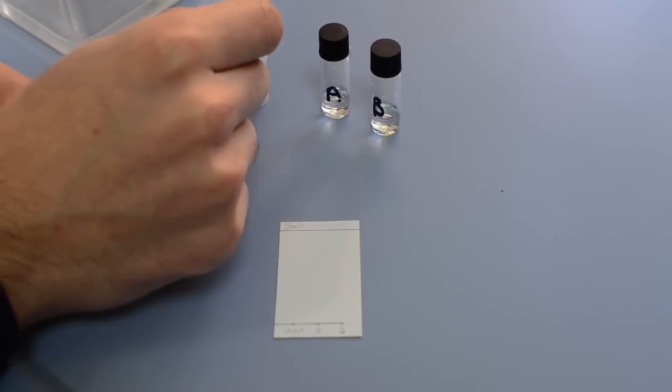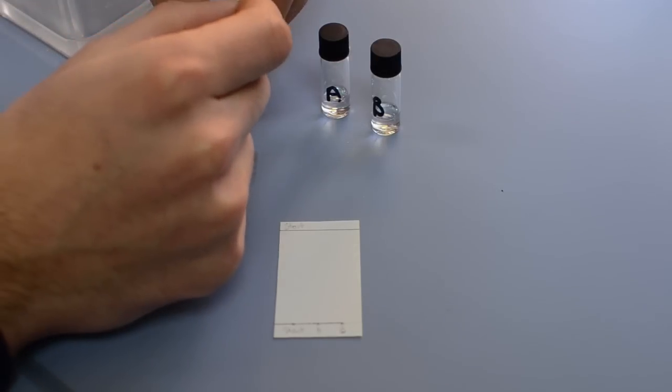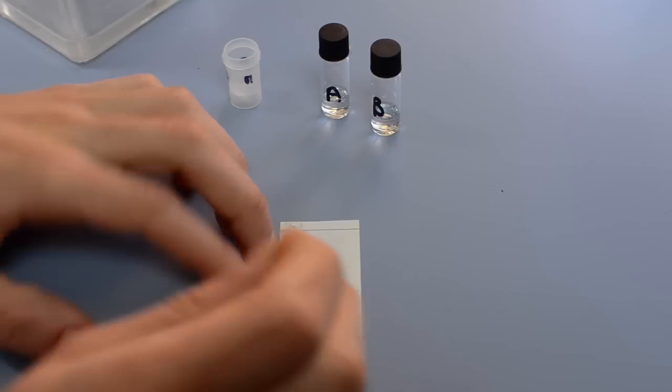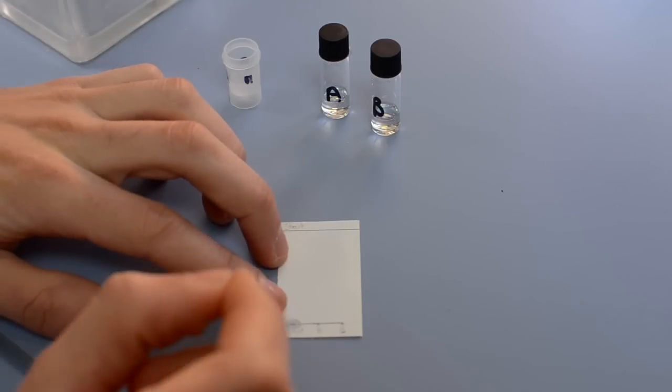Spot this next to your starting materials on the same TLC. Label each spot clearly. Develop the TLC after the run and identify the starting materials.